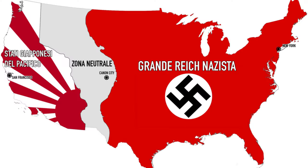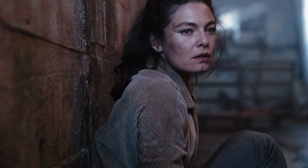The novel is set in a dystopian America divided into territories controlled by Nazi Germany and Imperial Japan. The story follows multiple characters, including Juliana Frink, who becomes intrigued by a mysterious book called The Grasshopper Lies Heavy, which depicts an alternate history where the Allies won the war.